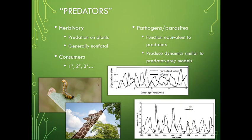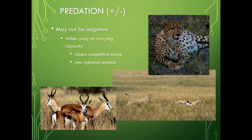Most pathogens function in a really equivalent way to predators and produce a lot of very similar dynamics. This is that classic dataset — the graph showing the interaction between hares and lynx — where we see these real big cycles. That's the same thing we see with a parasite wasp and a weevil, where the weevil is its host. There are definite similarities between predator-prey, herbivore and plant, and pathogens or parasites and their hosts.